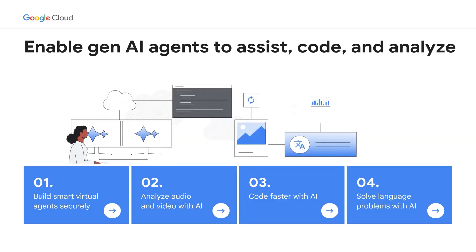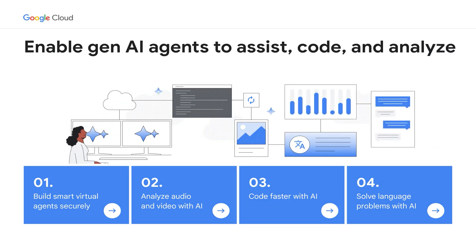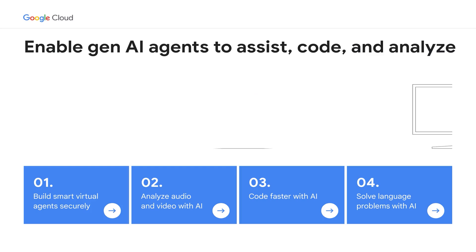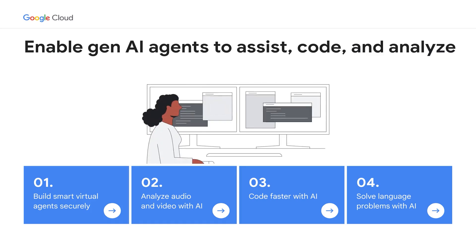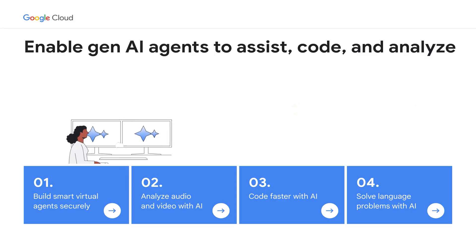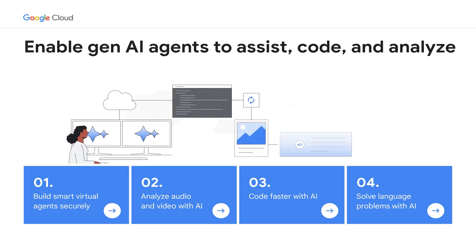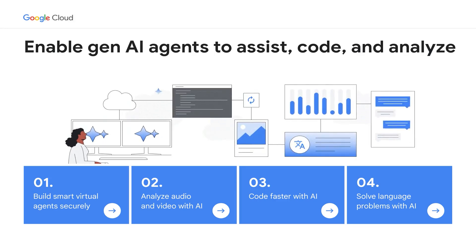Hi there. My name is Pak and I'm from Google Cloud AI. I'm here to tell you a little bit today about how telecommunication CSPs can use generative AI on Google Cloud to solve some of their biggest problems. We've been demoing how you can build smart virtual agents and also use Gemini on Google Cloud to analyze audio and video to drive insights that can help you as a CSP transform the way that you deliver your services to your customers. Let's have a look at some of those.